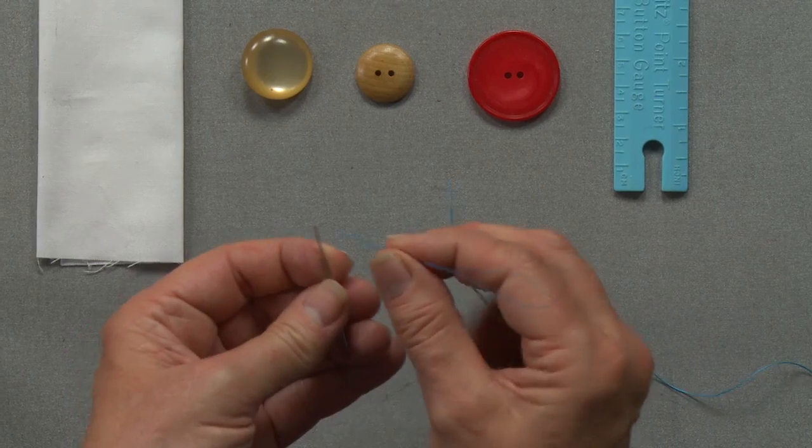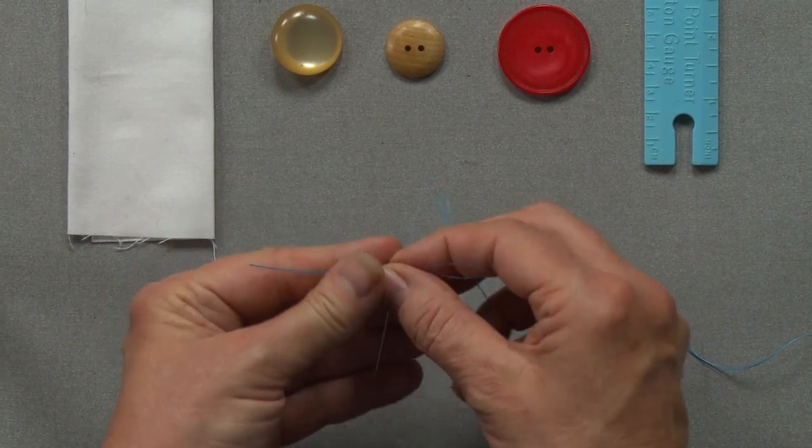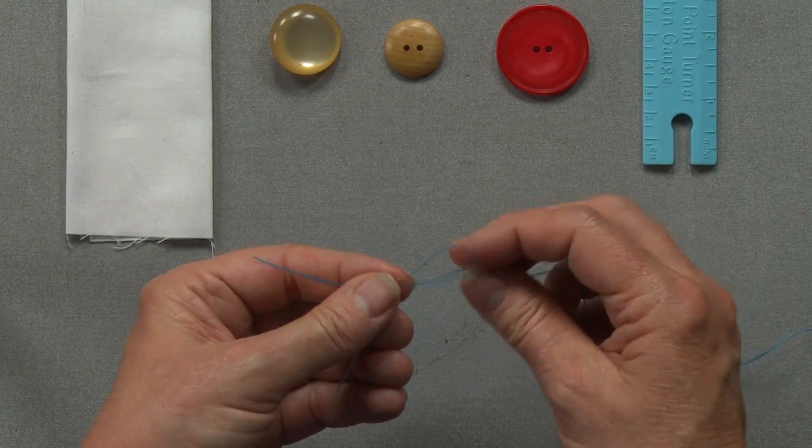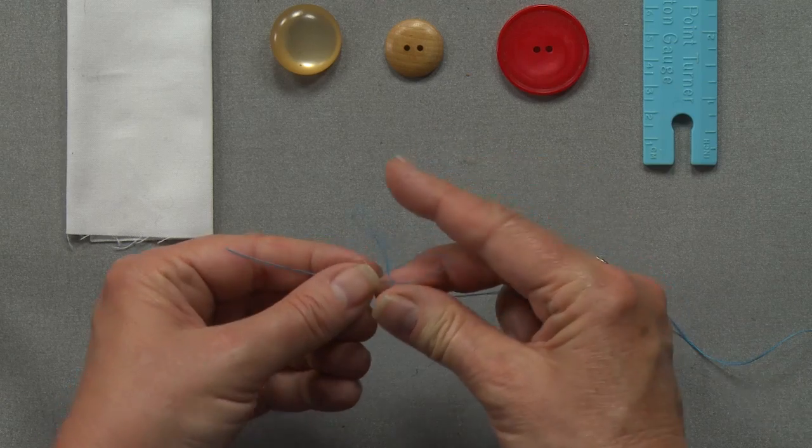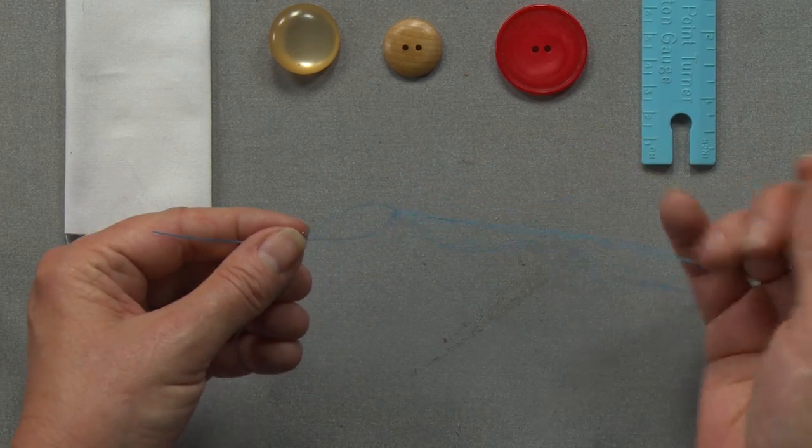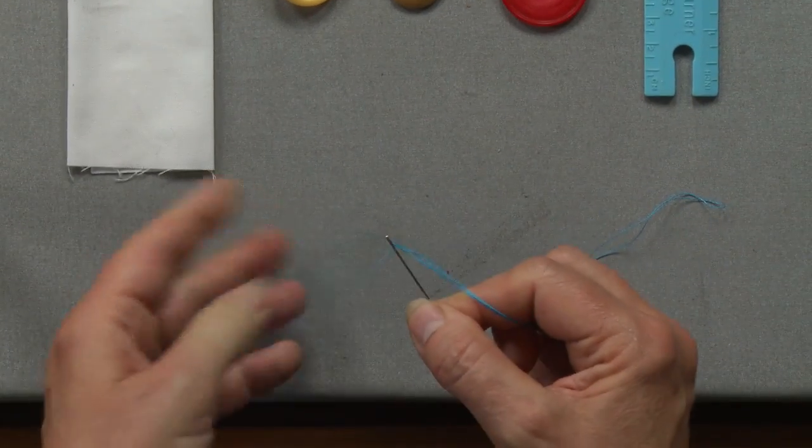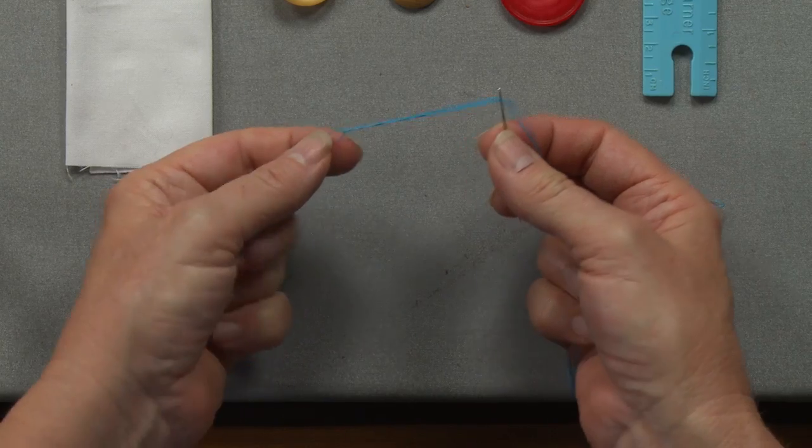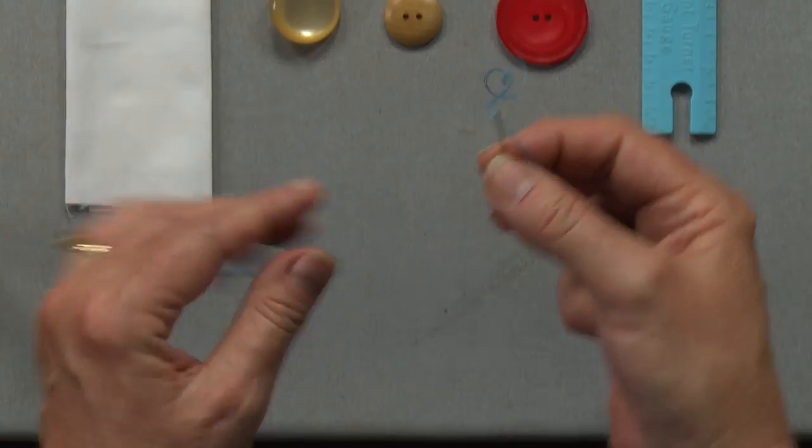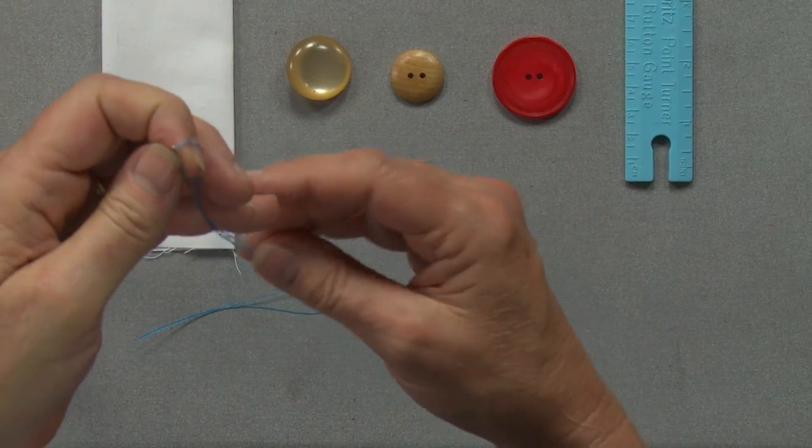One of the easiest ways to do this is to take a dental floss threader that you can find in any drugstore, then put your folded thread through the eye of the dental flosser, hold onto it, pull the dental flosser through the eye of the needle, and then simply pull your thread through.